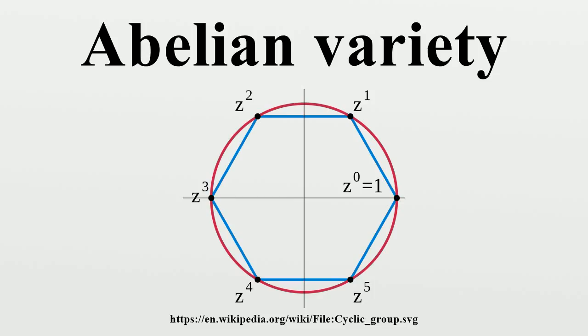Products: The product of an abelian variety A of dimension m and an abelian variety B of dimension n over the same field is an abelian variety of dimension m plus n. An abelian variety is simple if it is not isogenous to a product of abelian varieties of lower dimension. Any abelian variety is isogenous to a product of simple abelian varieties.